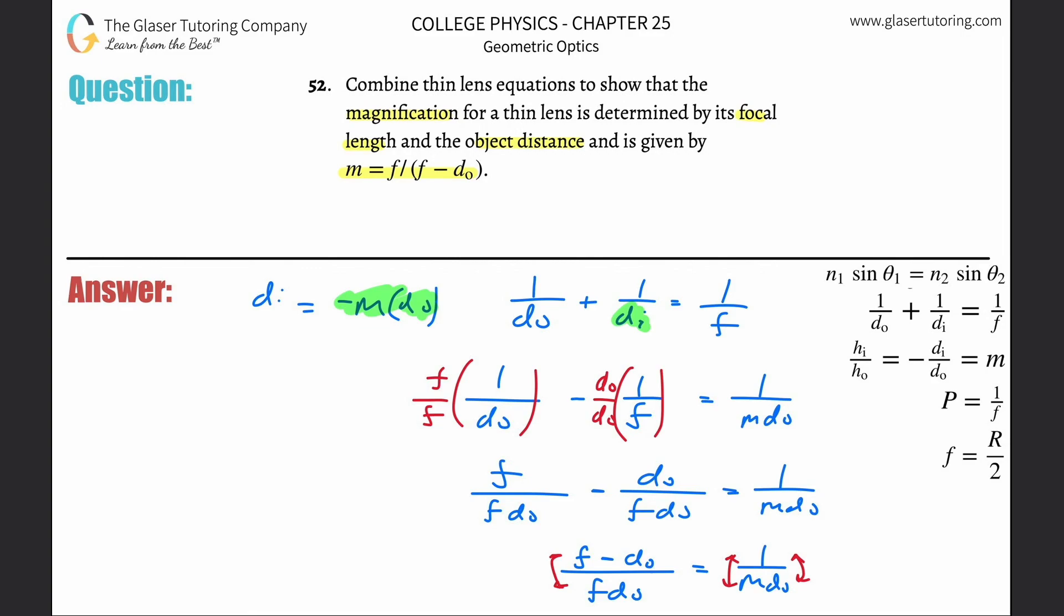So then what I'm going to, I'm going to continue to work on the left hand side over here. So this is now f do all over then f minus do is equal to now m do. Now I want to get rid of this do on the bottom.